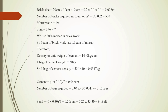Now we take the mortar ratio as 1:6, meaning 1 part cement and 6 parts sand. The sum of both values is 1 plus 6, equal to 7. We use 30% mortar in brickwork, so 1 cubic meter of brickwork has 0.3 cubic meters of mortar.